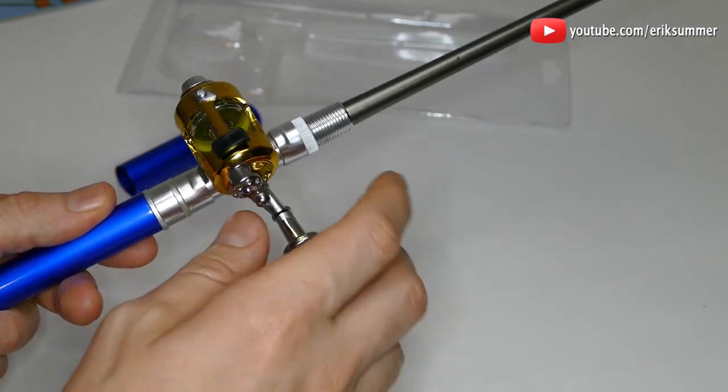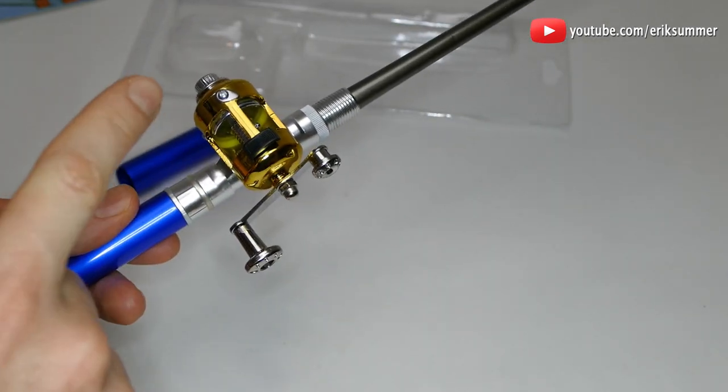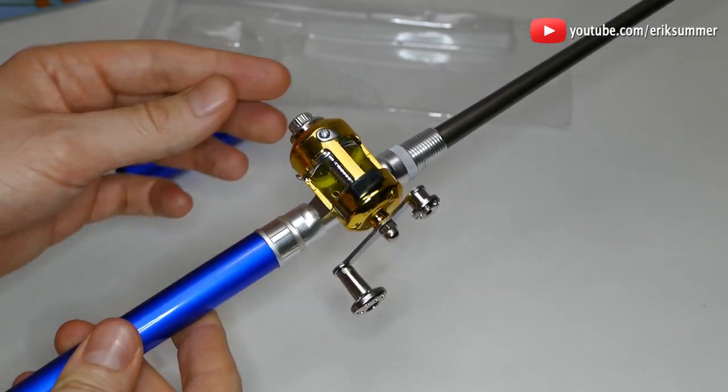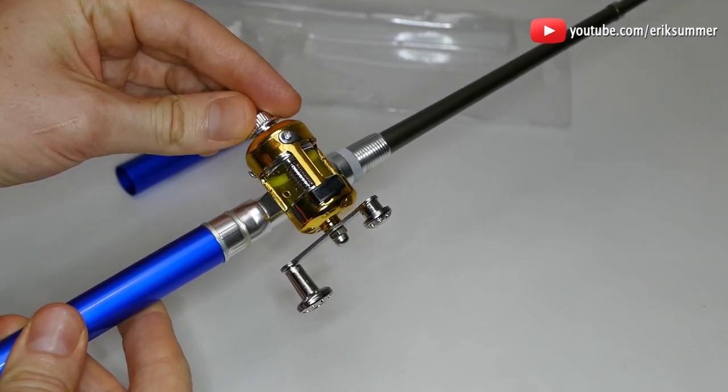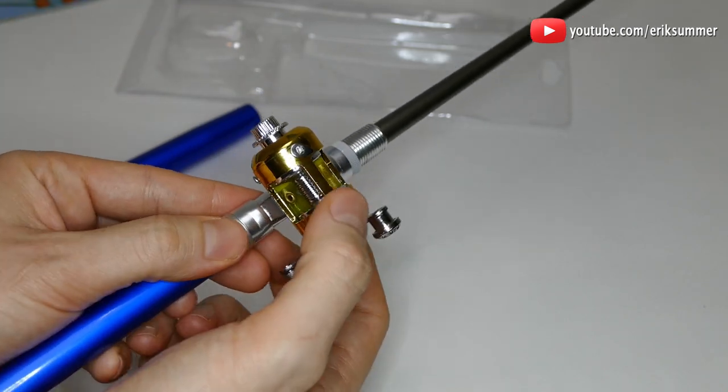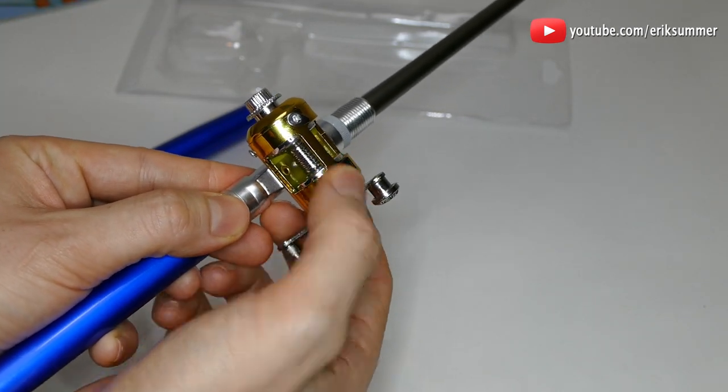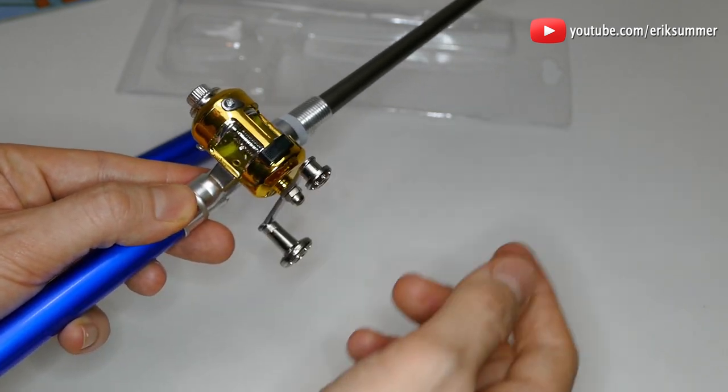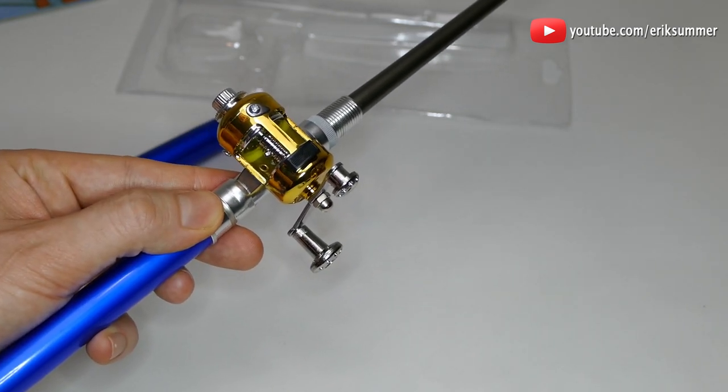So it actually feels really nice in the hand. Next, I'm going to go ahead and put some four pound fishing line on here. Over here you do have drag and I'll go ahead and test that out, and then you have another push stop. You can either push here or you can put your thumb on the fishing line here. So let's go ahead and get some fishing line on here.